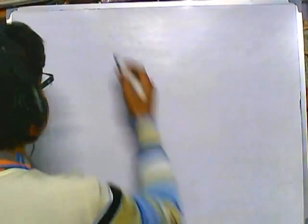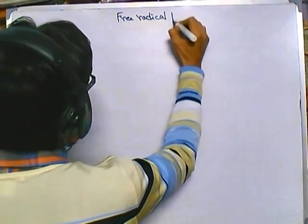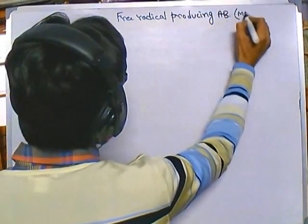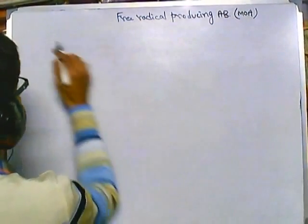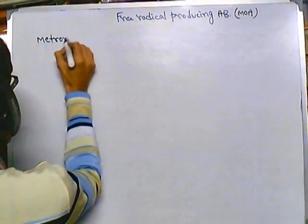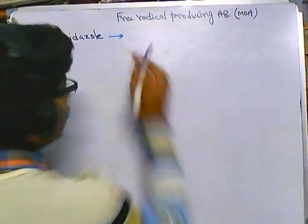Welcome back. In this video tutorial, we are talking about the mode of action of different kinds of antibiotics. This is a completely different type — this type of antibiotic uses free radicals to kill bacteria cells. One such antibiotic, and the group name, is called metronidazole. So we'll be talking about free radical-producing antibiotics and their mode of action in this video.